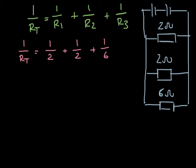Now 1 over 2 is equal to 3 over 6. So in creating a common denominator my equation becomes this: 3 over 6 plus 3 over 6 plus 1 over 6 which is equal to 7 over 6.